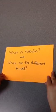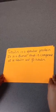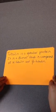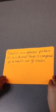What is tubulin and what are the different kinds? Tubulin is a globular protein. It is a dimer that is composed of alpha-tubulin and beta-tubulin.